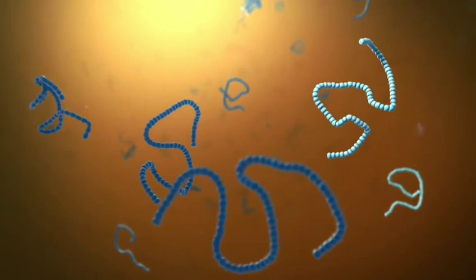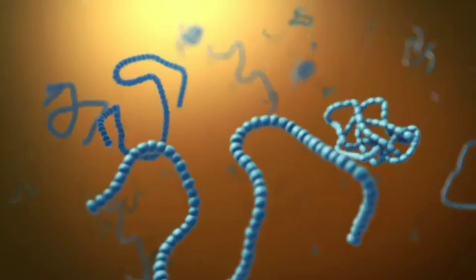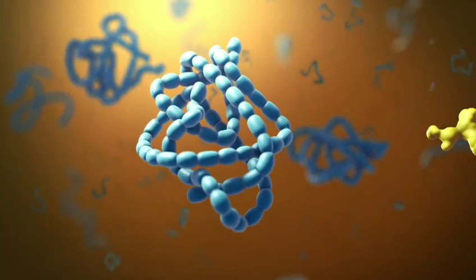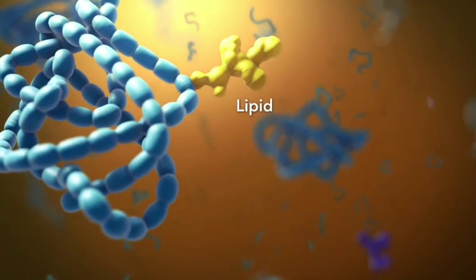As proteins move through the Golgi body, they're customized into forms that the cell can use. The Golgi body does this by folding the proteins into usable shapes or adding other materials onto them, such as lipids or carbohydrates.